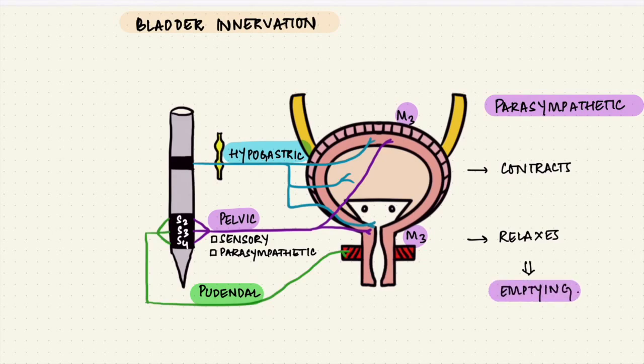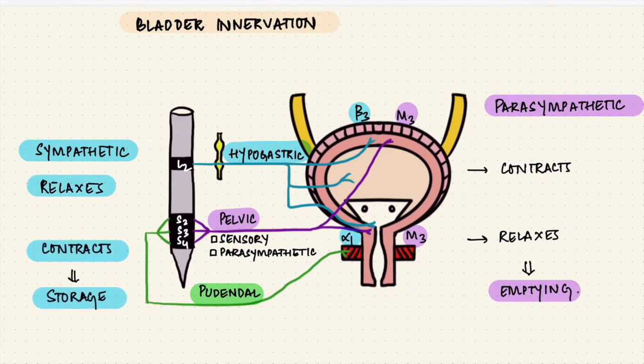The sympathetic fibers go via the hypogastric plexus from L2 on the spinal cord and they act on the beta 3 receptors on the detrusor muscle. So it relaxes the detrusor muscle and the effect that they have on the alpha 1 receptors of the sphincter causes contraction. So it's opposite to the action of the parasympathetic fibers and sympathetic fibers are responsible for storage. So S4S is a quick way to remember it.